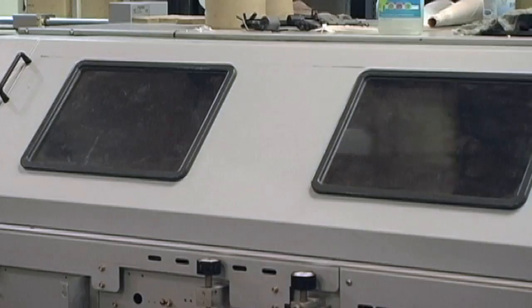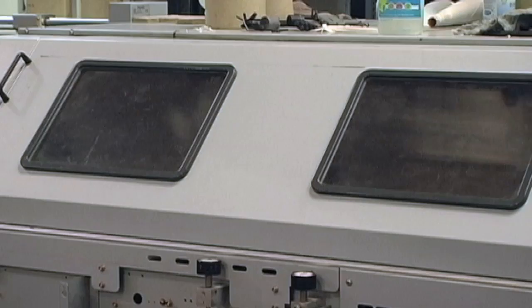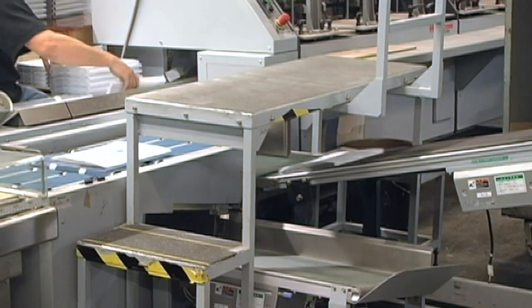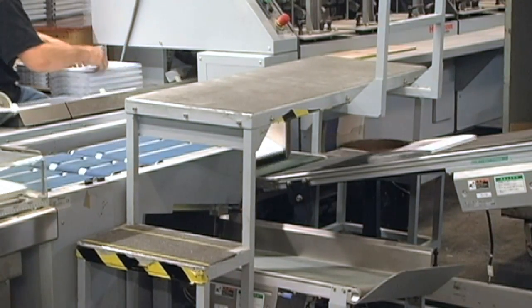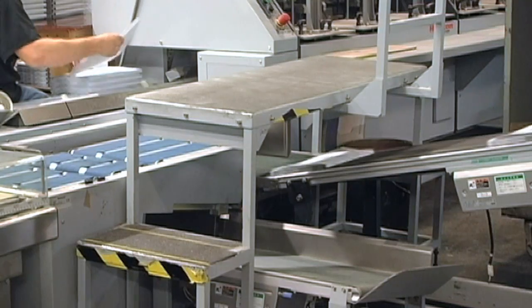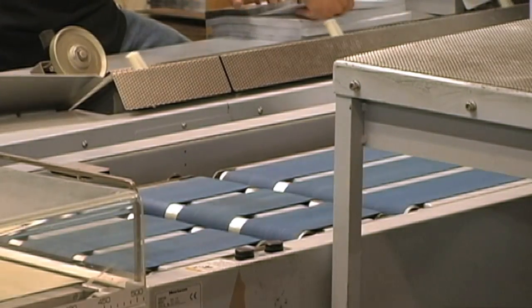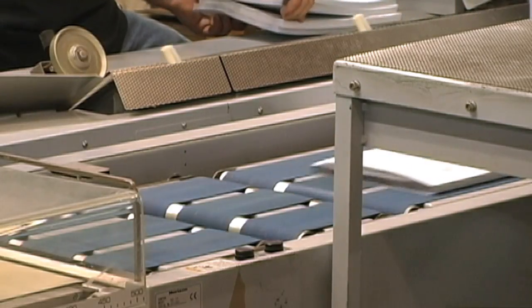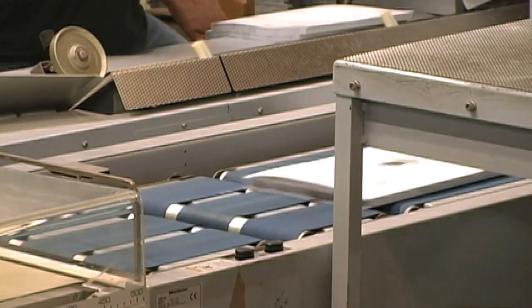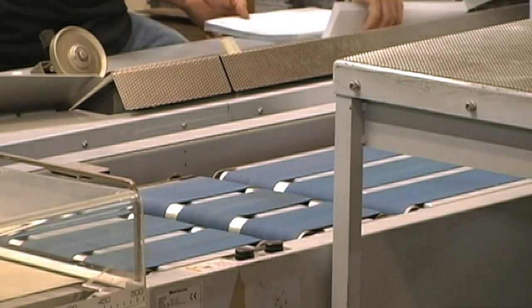This binder has nine pockets and is automated, binding 4,000 books per hour at top speed. We offer either a standard EVA glue or PUR adhesive. PUR offers superior adhesion over EVA and also adds the ability for the bound book to lay much more flat without compromising the binding strength.